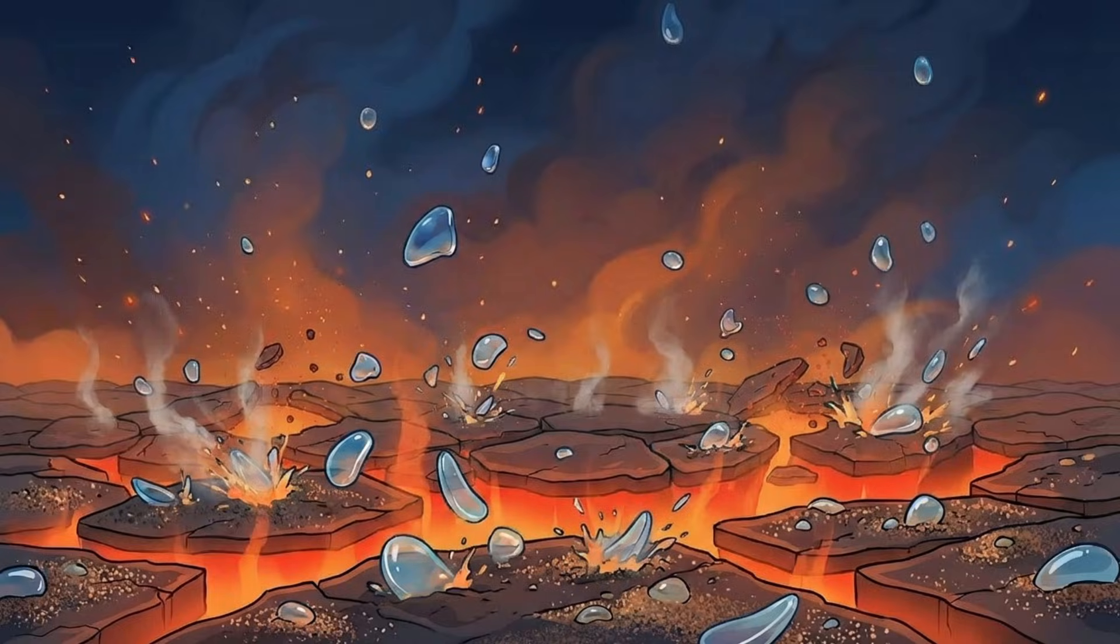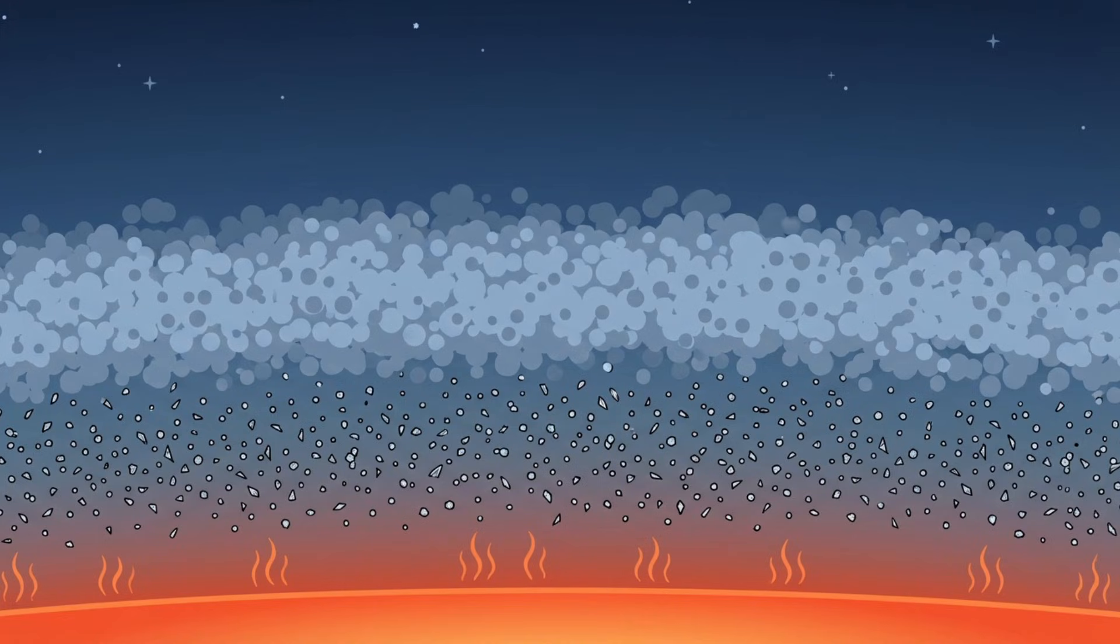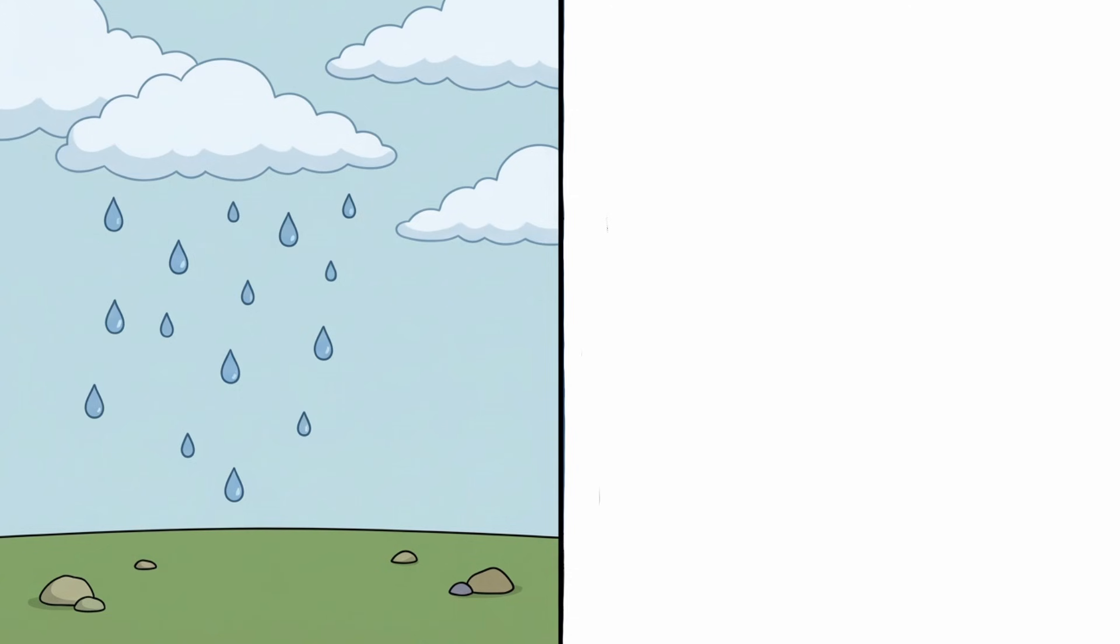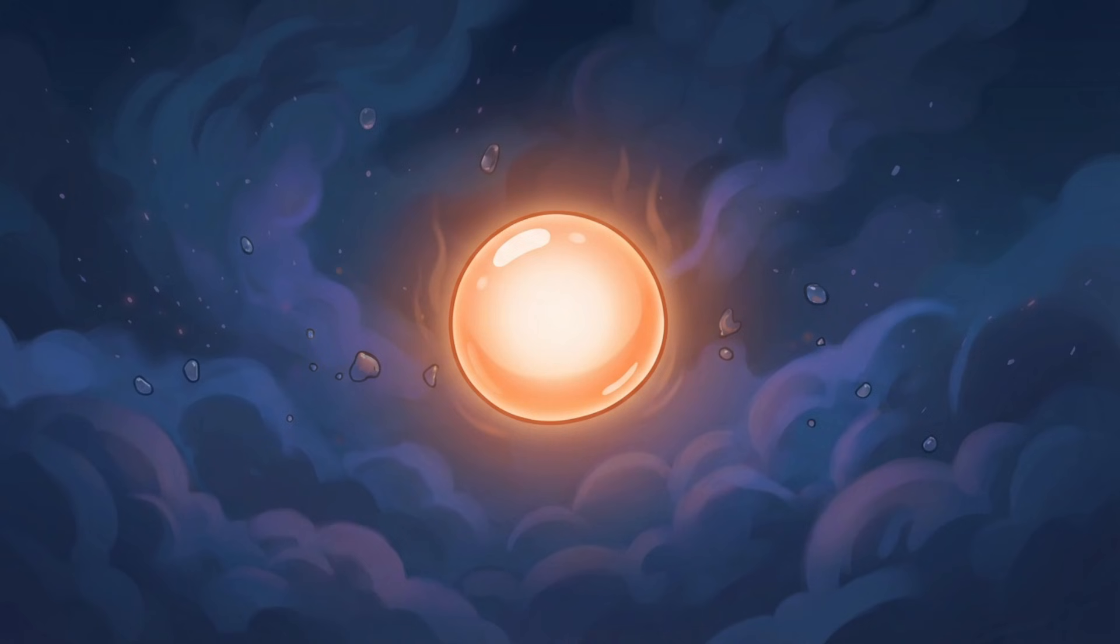In the upper atmosphere, this heat turns silicate minerals, materials found in sand and glass on Earth, into airborne particles. These particles form clouds. But unlike Earth, where clouds bring water, these clouds condense into molten glass droplets. This is the source of the planet's most unusual feature.